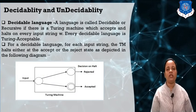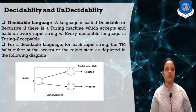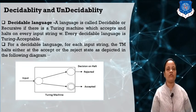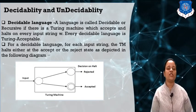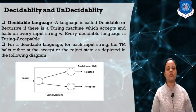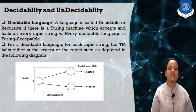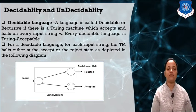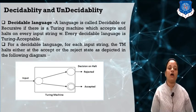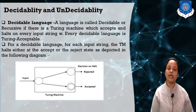What is the meaning of decidability and undecidability? We can understand this in terms of decidable language and undecidable language. A language is called decidable — also called recursive — if there exists a Turing machine which accepts and halts on every input string W. Every decidable language is Turing acceptable.